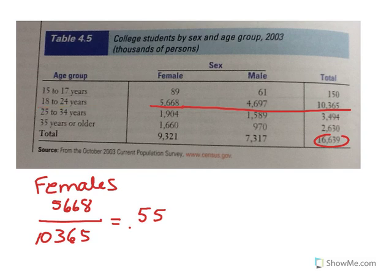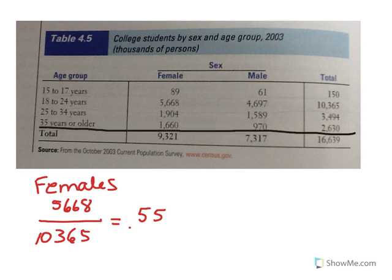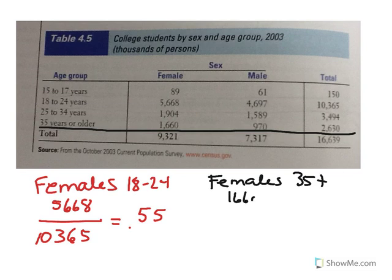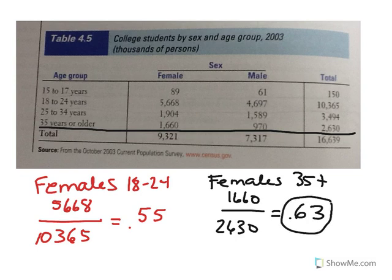If I look at a different age group — people 35 years or older — I'm doing the same calculation for females but in a different row. In this case, there are 1,660 females out of 2,630, which is a very different proportion: all the way up to 63%. This important observation tells us that as college students get older, a higher percentage of them are female. There could be a lot of reasons for this, but it's certainly an observation that gives us more information than just looking at numbers in a table.